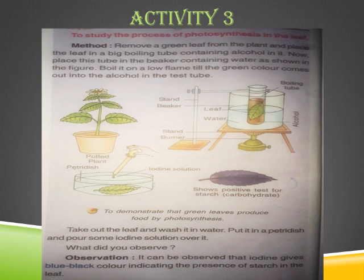The method is: remove a green leaf from the plant and place the leaf in a big boiling tube containing alcohol. Place this tube in a beaker containing water as shown in the figure. Boil it on a low flame until the green color comes out of the leaf into the alcohol. The alcohol in the test tube where the leaf is placed is not directly heated under the flame — the water in the beaker is heated, and the alcohol along with the leaf is heated indirectly.